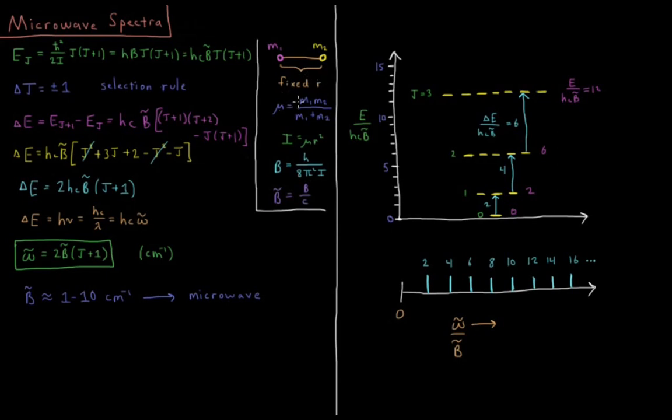They have a reduced mass which is mass 1 times mass 2 divided by mass 1 plus mass 2. The moment of inertia, resistance to angular acceleration of this system, is mu r squared. The rotational constant of this molecule is Planck's constant divided by 8 pi squared times moment of inertia, and b bar, the rotational constant in units of wavenumbers inverse centimeters instead of in hertz like b is, is b over c, h over 8 pi squared c times i, c being the speed of light in centimeters per second.